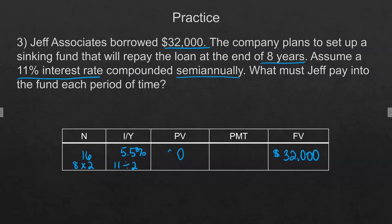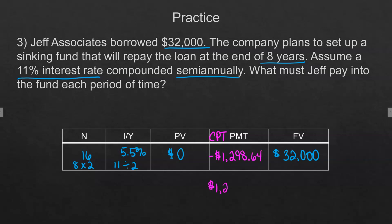The present value is zero and we're checking the payment. When you compute it on your calculator it shows up as a negative, and the answer is $1,298.64. That's what we would have to pay 16 times to end up with the $32,000 future value.